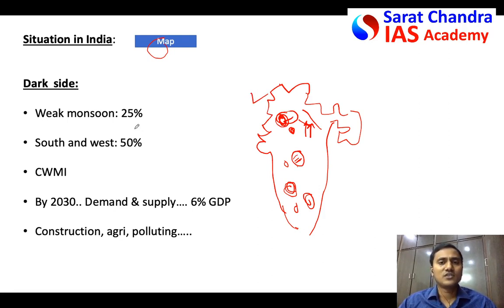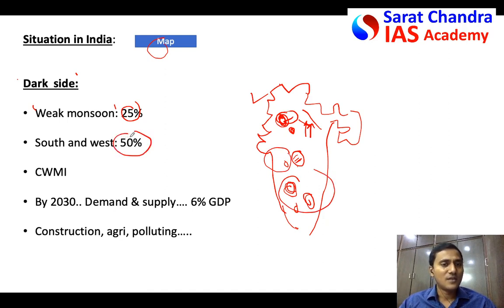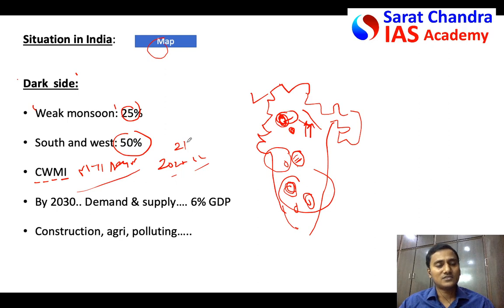Now, critically analyzing the situation in India — write both negative and positive aspects. In the last two years, weak monsoon has put about 25 percent of India under drought, particularly south and western India, with 50 percent drought fluctuation. The Composite Water Management Index report by NITI Aayog stated that by 2020-22, almost 21 major cities of India like Delhi, Mumbai, and Chennai are going to have zero groundwater, and almost 100 million people will be affected.